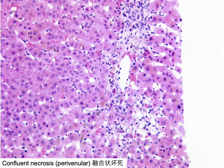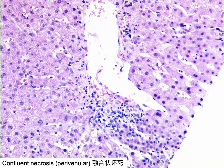Confluent necrosis refers to the necrosis of a large group of contiguous hepatocytes, typically in the perivenular region of the liver. This type of necrosis signifies a more active and severe injury to the liver parenchyma compared to spotty necrosis. It is commonly associated with conditions such as acute viral hepatitis, drug-induced liver injury, and autoimmune hepatitis. Less commonly, it may also be observed in chronic viral hepatitis, such as seroconversion in chronic hepatitis B and superinfection of chronic hepatitis B by hepatitis D virus.